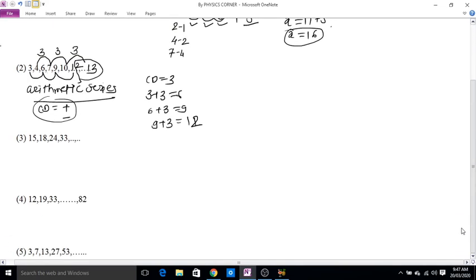Third example: 15, 18, 24, 33. Using the pyramid method: 18 minus 15 equals 3, 24 minus 18 equals 6, 33 minus 24 equals 9. The differences are 3, 6, 9, 12. So x minus 33 equals 12, therefore x equals 33 plus 12. The next number is 45.